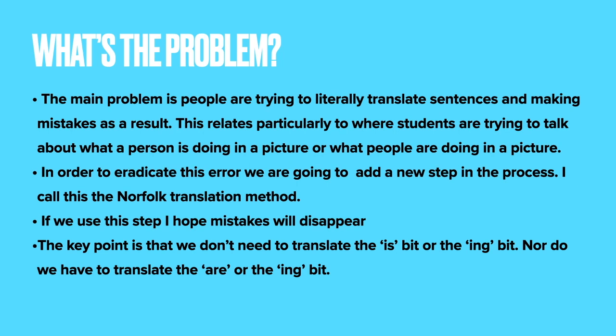So what is the problem? The main problem is that people are trying to literally translate sentences and making mistakes as a result. This relates particularly to where students are trying to talk about what a person is doing in a picture or what people are doing in a picture. In order to eradicate this error — where people are trying to translate the word 'is', 'are', and the '-ing' bit of the verb — I've come up with what I call the Norfolk Translation Method, which relates to a little quirk of Norfolk speech that I have picked up since living in Norfolk.